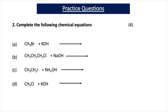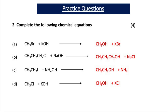Practice question 2 asks you to complete chemical equations. 2A: CH₃Br + KOH → CH₃OH + KBr. 2B: CH₃CH₂CH₂Cl + NaOH → CH₃CH₂CH₂OH + NaCl. 2C: CH₃CH₂I + NH₄OH → CH₃CH₂OH + NH₄I. 2D: CH₃Cl + KOH → CH₃OH + KCl. There is one mark for each correct equation.